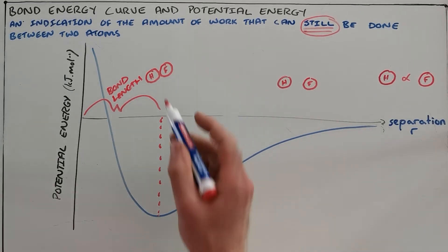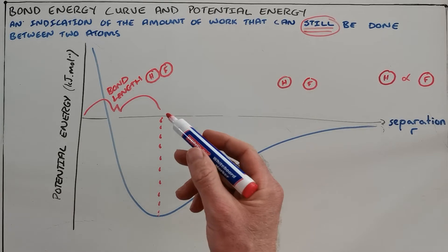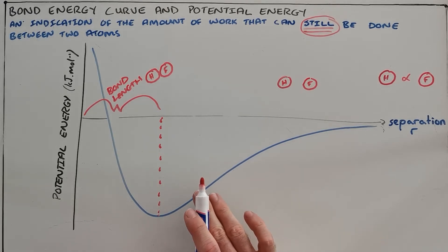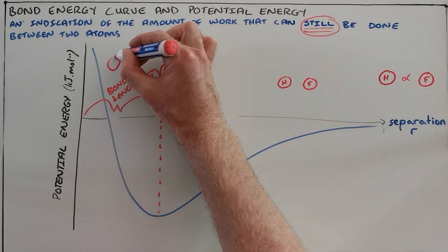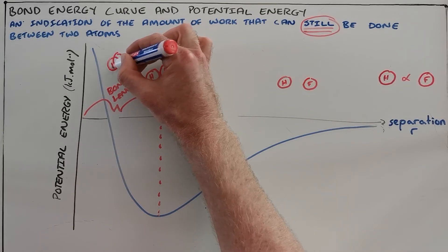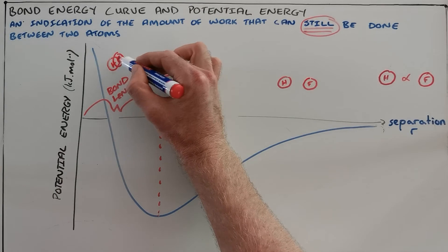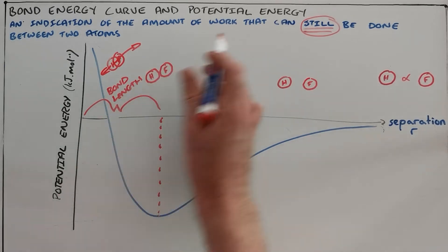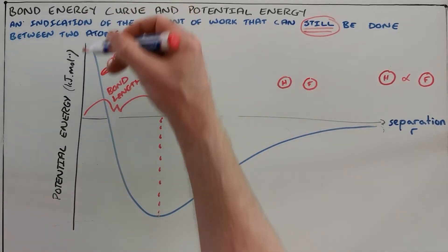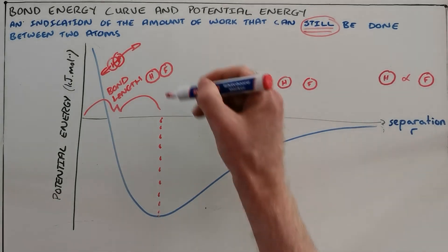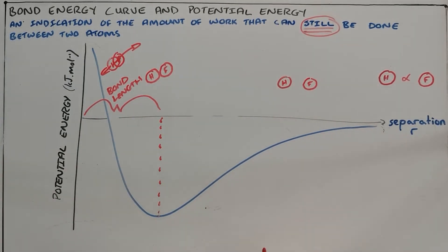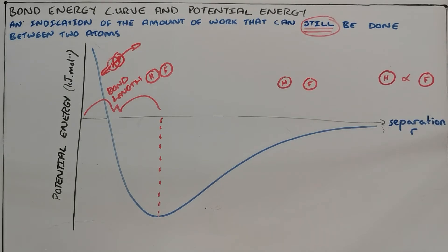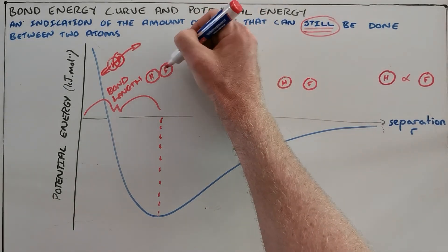It is possible to force these two atoms closer together, but that would require the two orbitals to no longer simply overlap but to occupy the same space. If we continue to force them closer together, the nuclei of each atom start to interact with each other and repel each other, pushing them apart and giving them reason for more work to be done. This causes a very sharp increase in potential energy at distances shorter than the bond length. At the bond length we have the ideal separation where orbitals overlap without significant interaction between the nuclei.